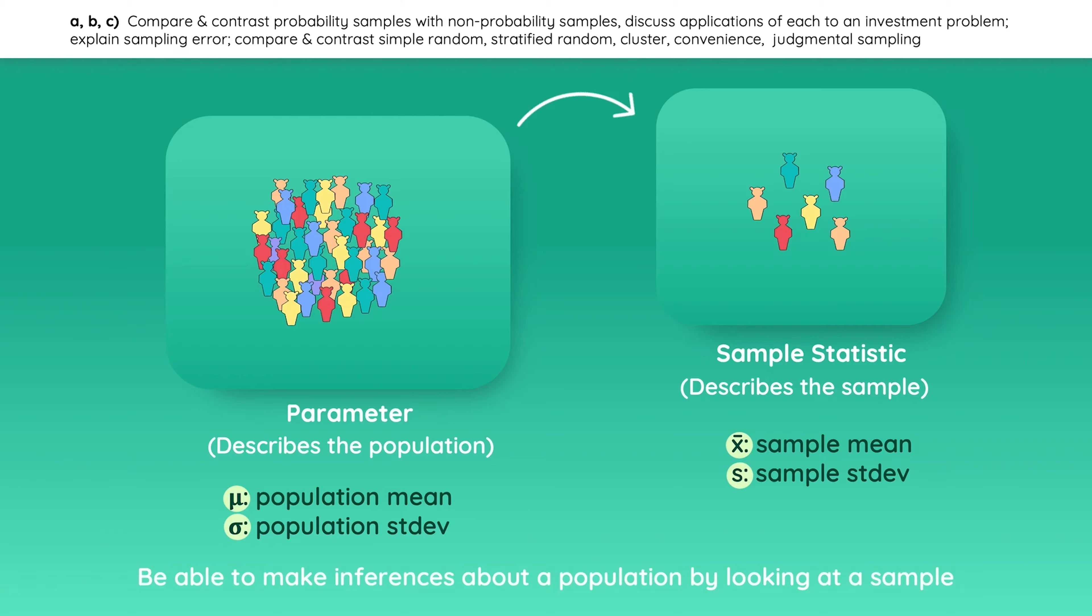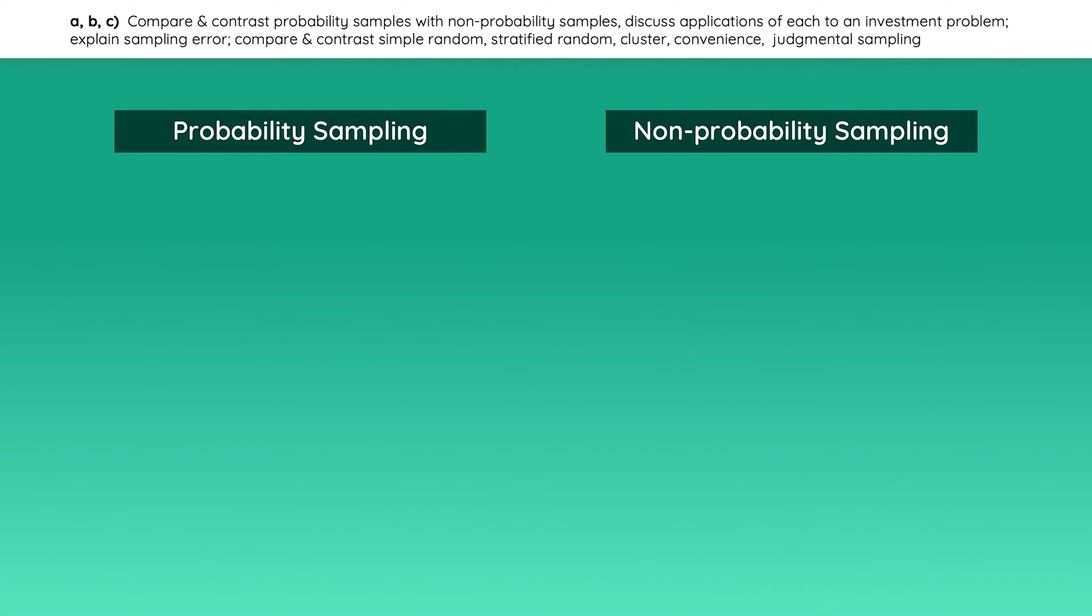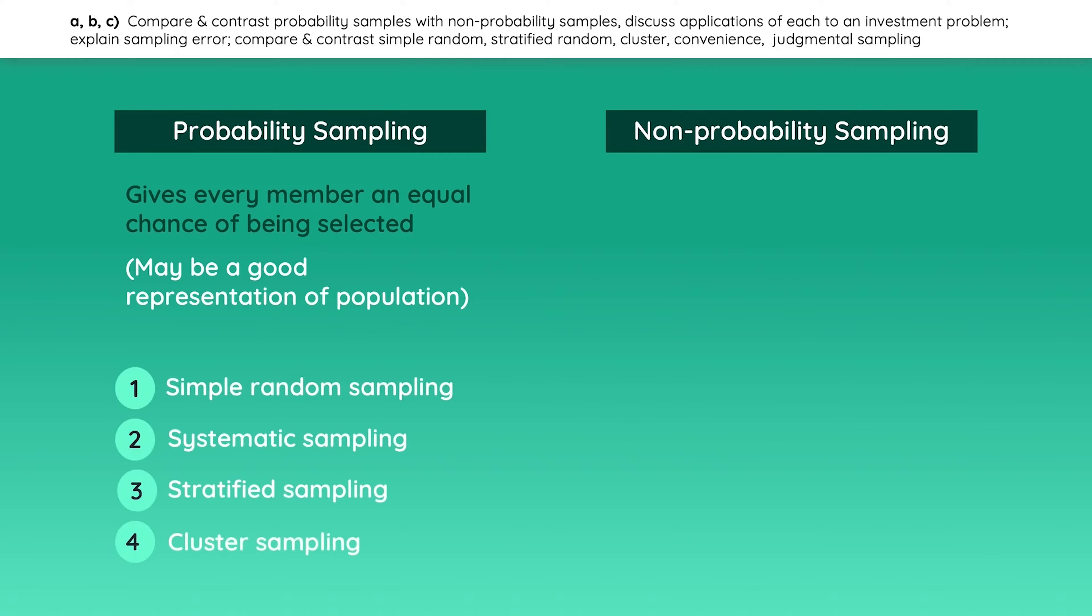But how are samples actually selected? Probability sampling gives every member of the population an equal chance of being selected, so the sample tends to be a good representation of the population. It includes simple random, systematic, stratified, and cluster sampling. Non-probability sampling depends on specific factors so the sample may not be a good representation of the population. It includes convenience and judgment sampling. So let's review each of these individually.